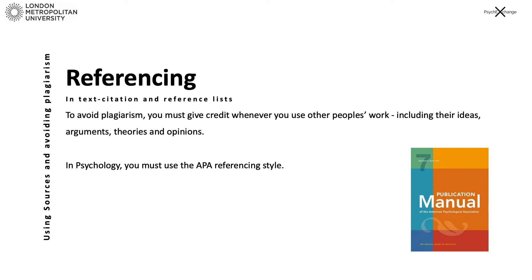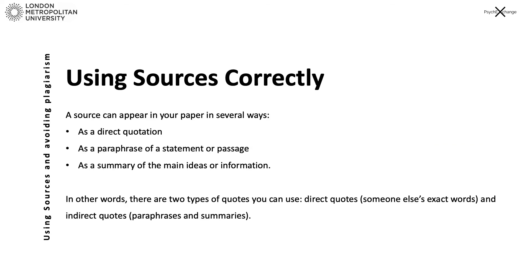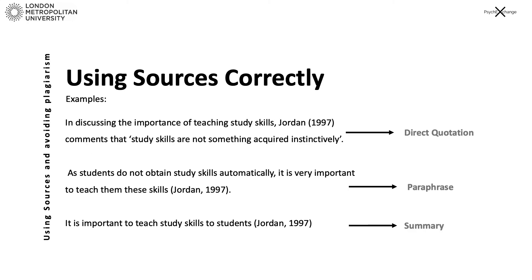Please ensure that you are referencing. Bernard has created a video on APA referencing, 7th edition — it's available on WebLearn. Now that you know how to avoid plagiarism, how do you actually use sources correctly? Either by direct quotes, indirect quotes, or as a summary of the main ideas. Here are some examples of a direct quote, an indirect quote, and a summary.